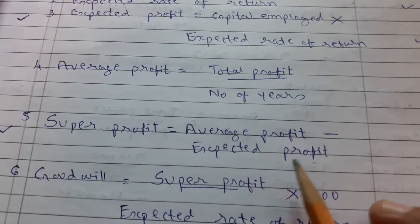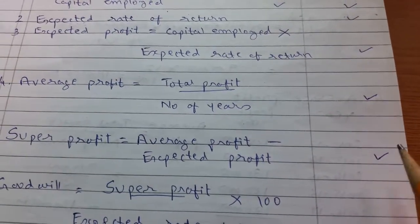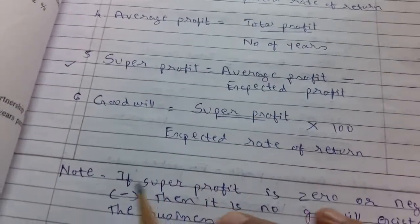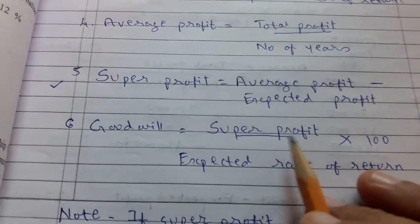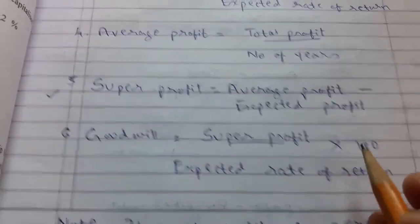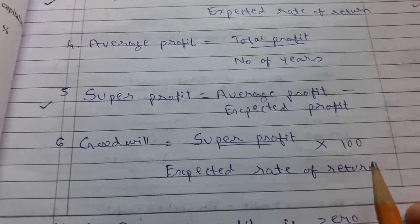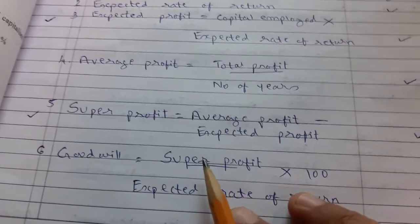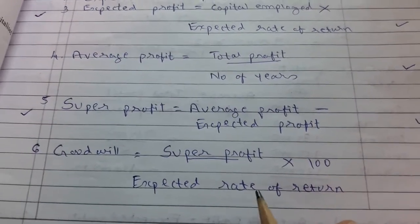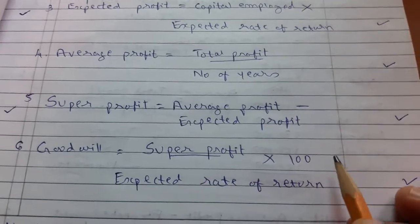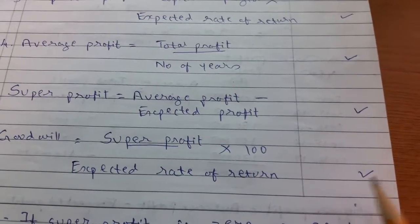Step 4 minus step 3 equals super profit. Goodwill as per this method equals super profit multiplied by 100 divided by expected rate of return. Because the rate is in percentage, we multiply by 100. That gives you the goodwill amount.